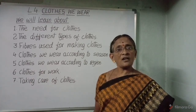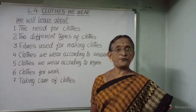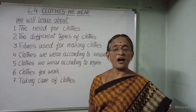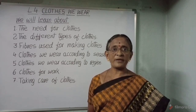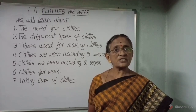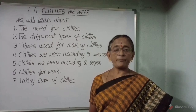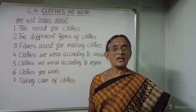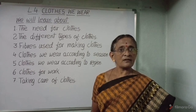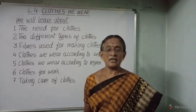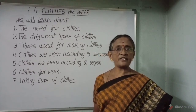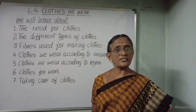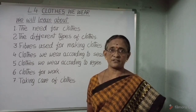What are our basic needs? Food, clothing, and shelter are our basic needs. Clothes are made up of different types of materials that suit the weather of a place. People wear different types of clothes according to region and according to the season.